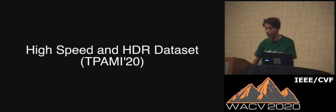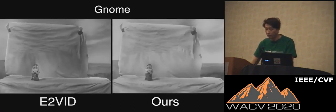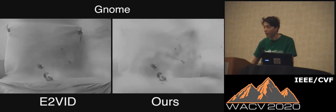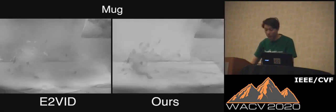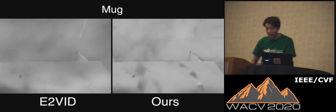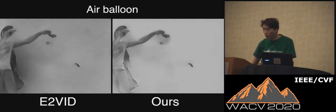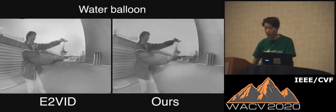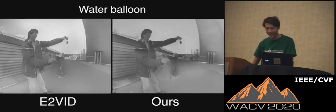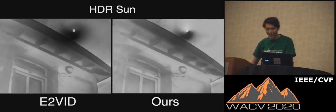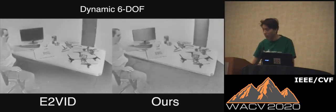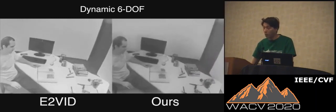So to demonstrate results, I'll show you some example sequences. On the left will be the previous state of the art, and on the right is our method. These are some high-speed sequences, and you can see that the image quality is very similar. I'll show you some more results from a different dataset, just again to show that we get quite similar image quality, but it's much faster and much more computationally efficient.